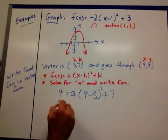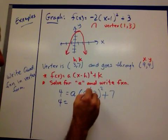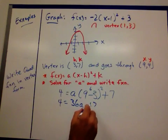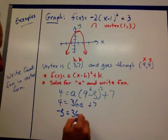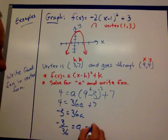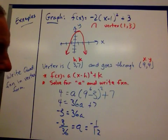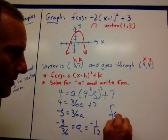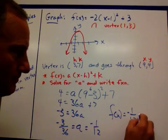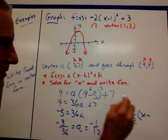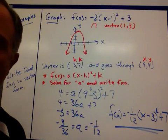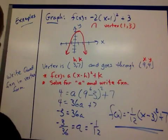So let's solve for a here. 9 minus 3 is 6. 6 squared is 36, so I've got 36 times a plus the 7. Subtract the 7 over. Divide out the 36. Simplify that down as negative 1/12. So there's my a. So my equation, my function in vertex form, put my a in there. I'm going to get x minus my h squared plus my k. There's the equation of the line that goes through the vertex there and through that point.